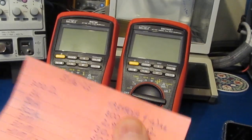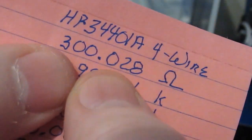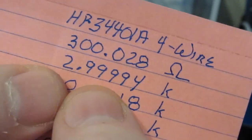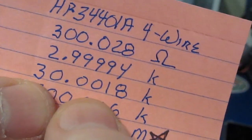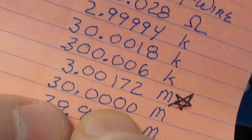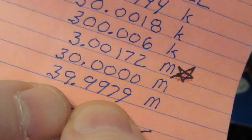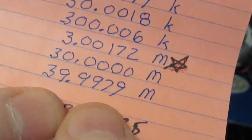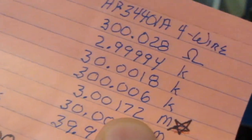To do that, I was using my HP 34401a. You can see 300 ohms we're measuring 300.028. This is our 3k and 30k, 300k, 3 meg, 30 meg, and 40 meg or 25 nanosiemens.